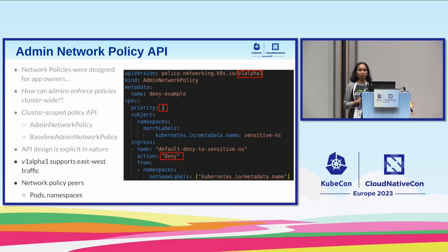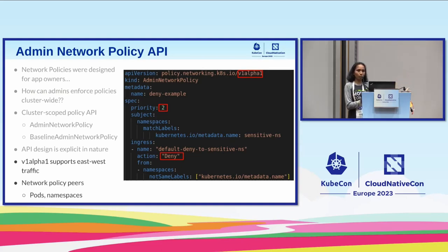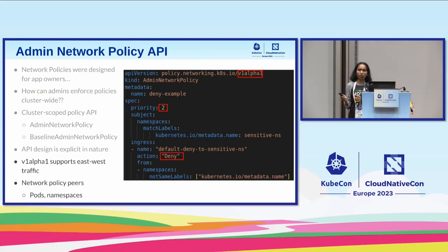The API design is explicit in nature — we tried to learn from the network policy design and hopefully did better. There's a new field called priority, which is powerful and lets you set what precedence you want your rules to be in, in case you have overlapping subjects and peers. We also have an explicit deny action or allow action that you can specify, instead of it being an implicit deny. So you get what you ask for — there's no implicitness, and it mimics the traditional firewall that operators and administrators are used to.